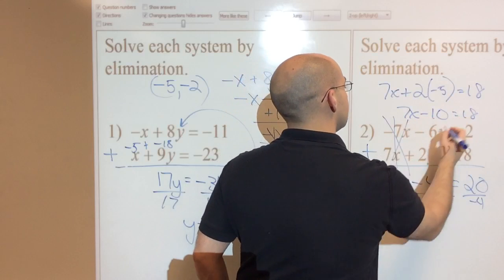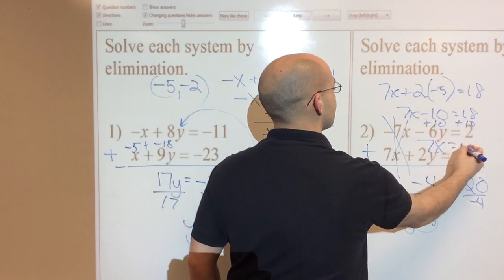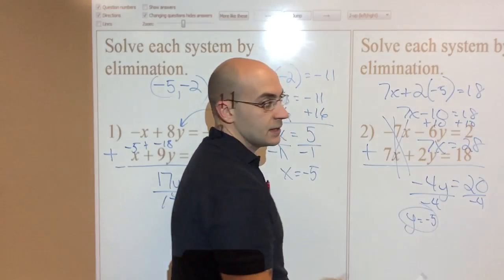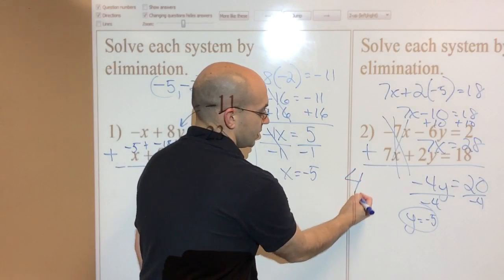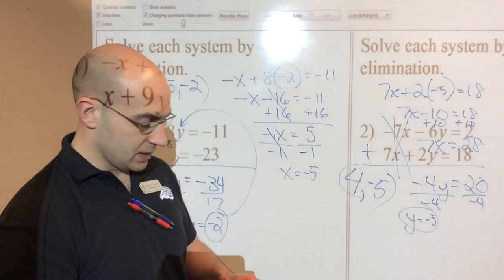So negative 5 goes right here. So 7x plus 2 times negative 5 equals 18. 7x minus 10 equals 18. Add 10 on both sides. And I'll have 7x equals 28. And my answer is x equals 4. The system's solution is 4, negative 5. And I'm done. I'm not going to plug it back in, but you get the idea.